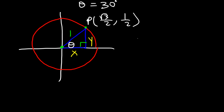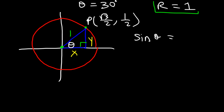Now we said that sine of theta, when we have a unit circle — and keep in mind, this will be true when r is 1; if r is not 1, the equation will change, which we'll talk about later — but for a unit circle, sine theta is simply y. So in this case, sine 30 is the y coordinate, 1 half. Cosine theta we said is x.